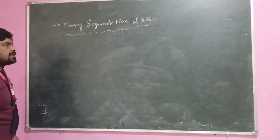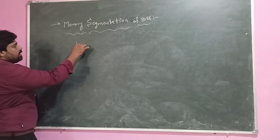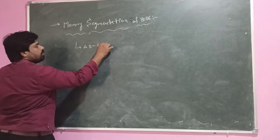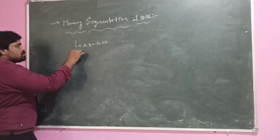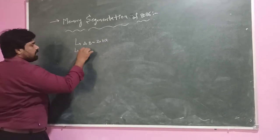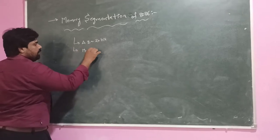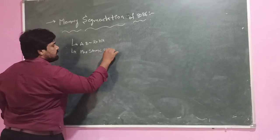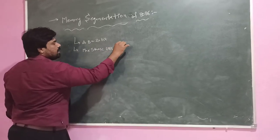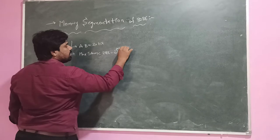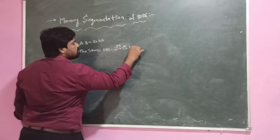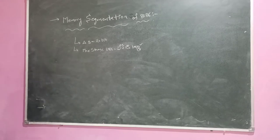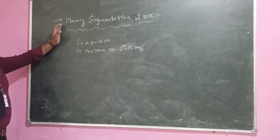Coming to the 8086, the address bus width of the 8086 is 20 bits. So the maximum storage capacity of 8086 is 2 to the power 20 addresses. The maximum storage capacity of the 8086 microprocessor is 1MB.